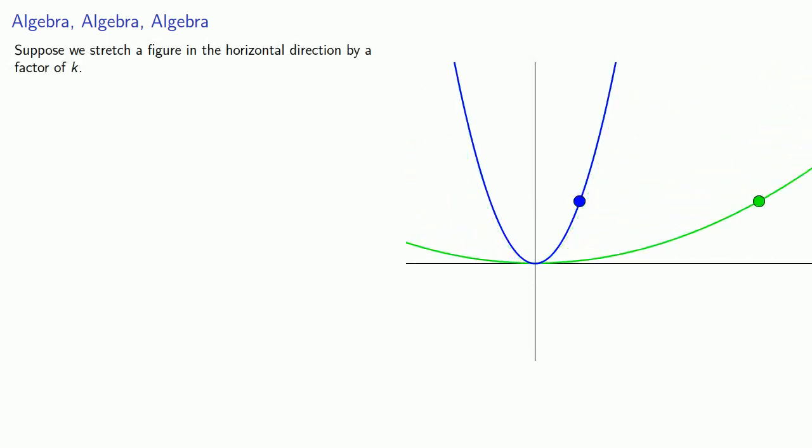What this means is that any point on the graph with coordinates x, y will be moved to a point with coordinates kx, y. So we could write this down as (x, y) goes to (kx, y).